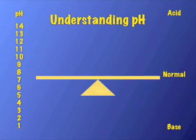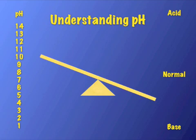A seesaw analogy helps illustrate how pH works. On the left-hand side, the pH scale goes from 1 up to 14 — 7 is neutral, anything higher is alkaline, everything lower is acidic. The seesaw visual shows that as the number goes lower, acidity increases, and as the number goes higher, it becomes more basic or alkaline.